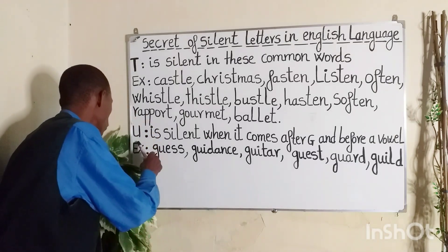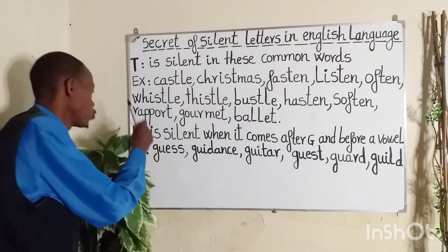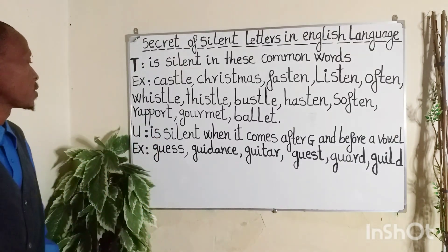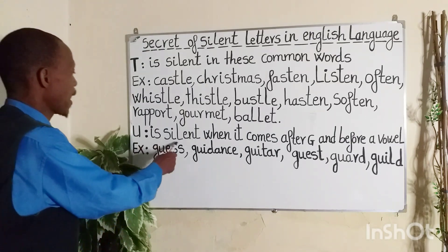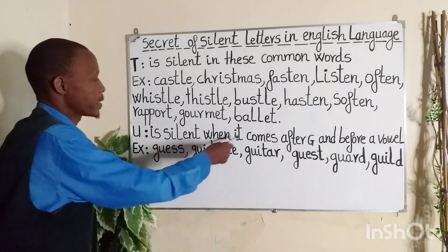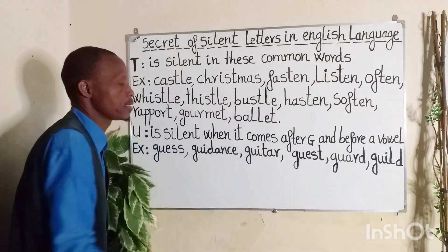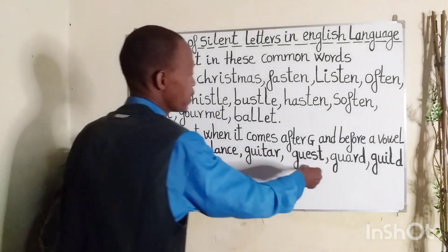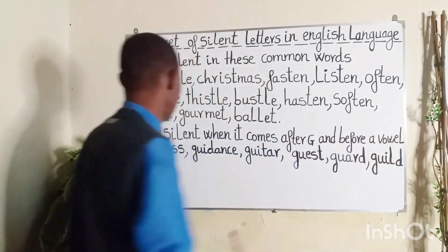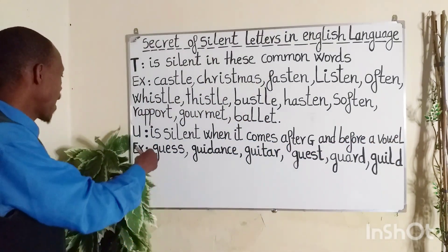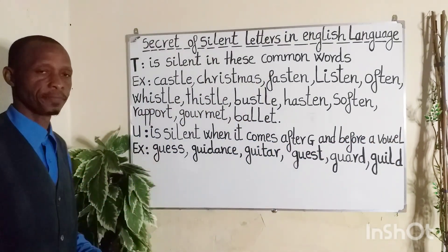Moving on to the letter U. U is silent when it comes after G and before a vowel. Examples: